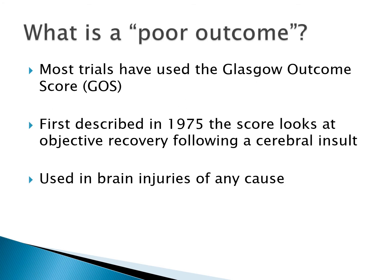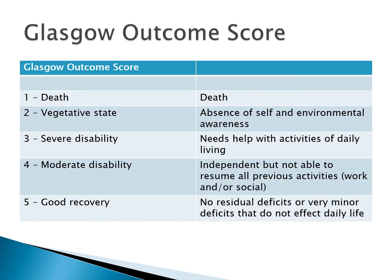So what is a poor outcome? Most trials that have looked at outcome following neurological insults have used the Glasgow Outcome Score, or GOS. This was first described back in 1975 and looks at objective recovery following any insult to the brain. The Glasgow Outcome Score rates outcome on a scale of one to five, where one, two and three are rated as poor outcomes whereas four and five are considered to be reasonably good outcomes.